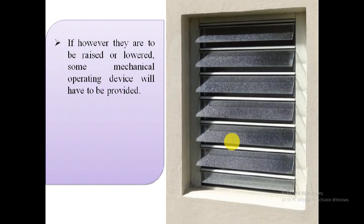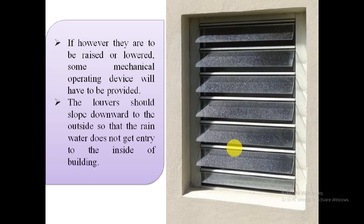If the louvered windows are to be raised or lowered, some mechanical operating device will have to be provided. The louvers should slope downward to the outside so that rainwater does not enter the inside of the building.